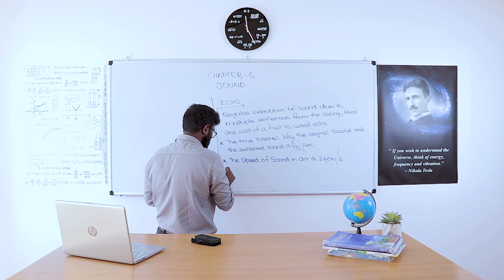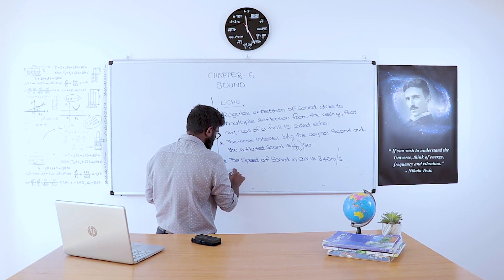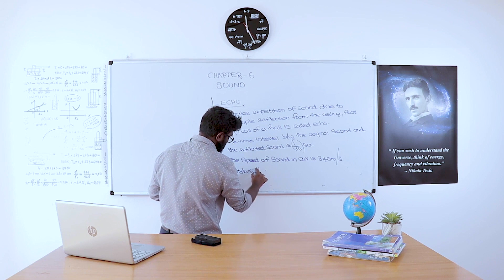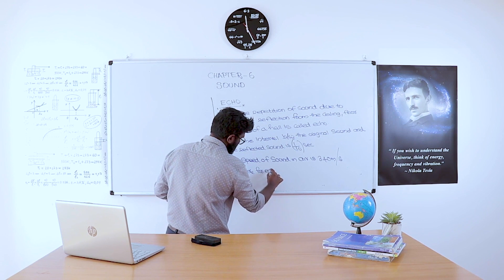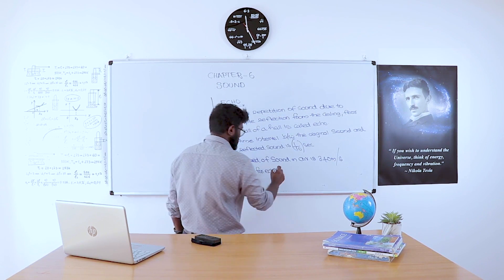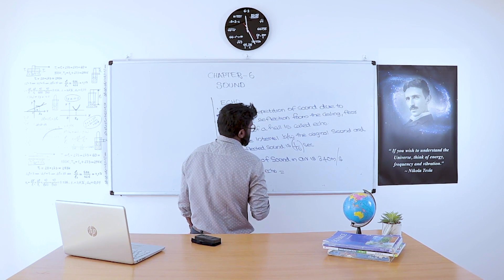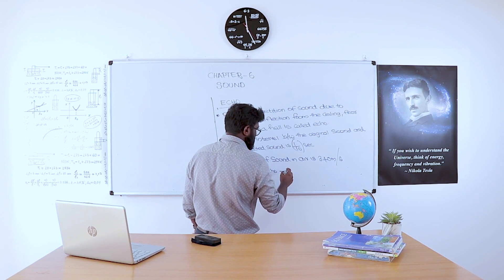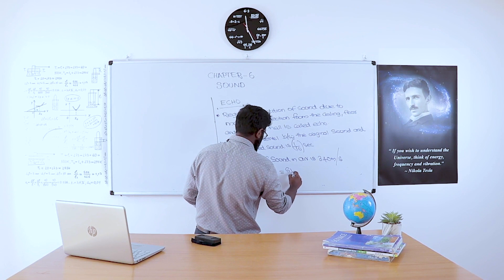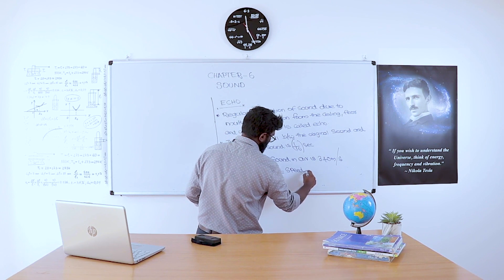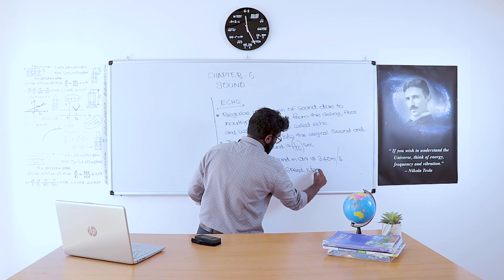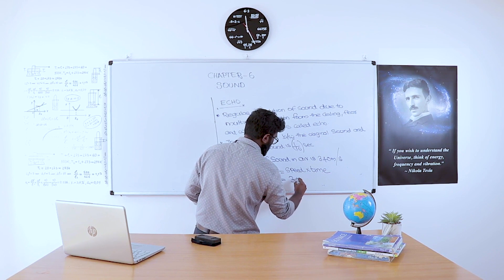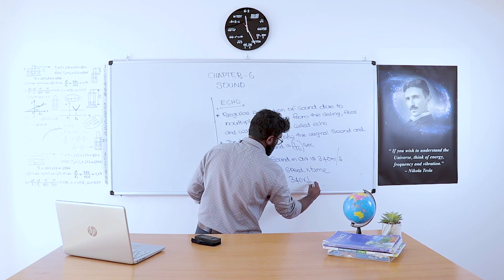The speed of sound is 340 meters per second. So how can we calculate the distance for echo? The distance for echo is equal to speed into time, which is 340 into 1/10.